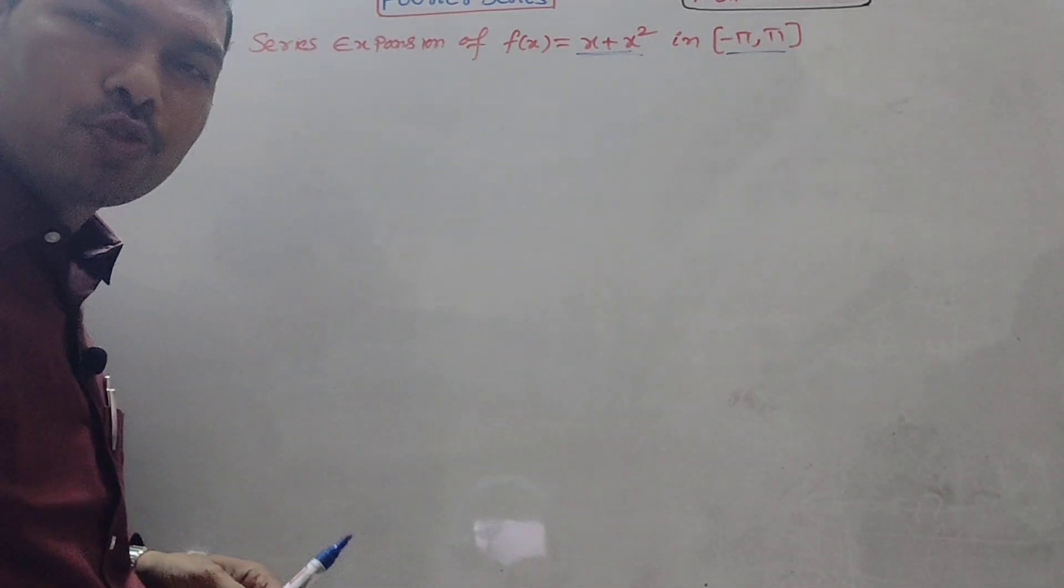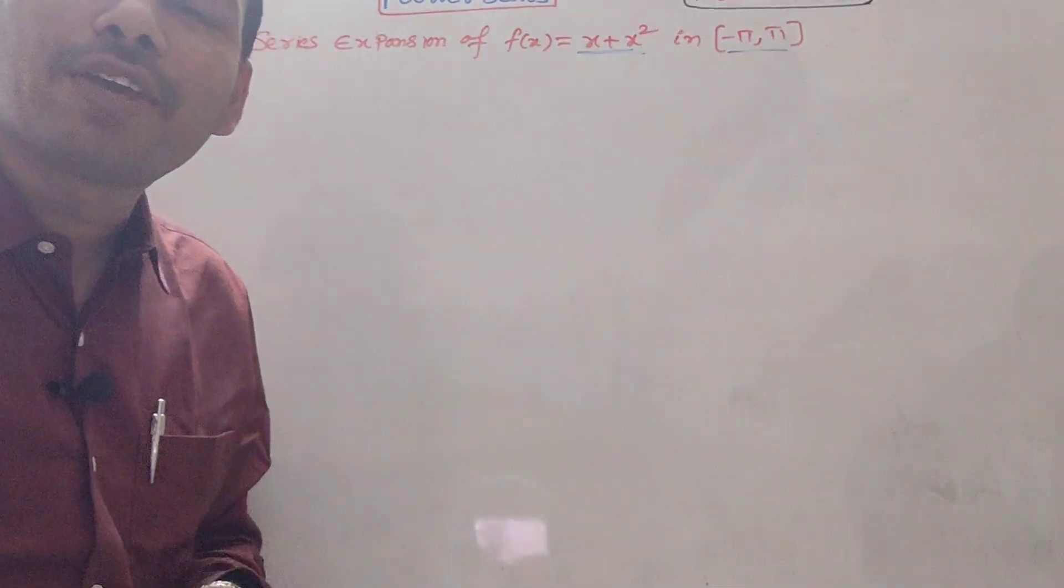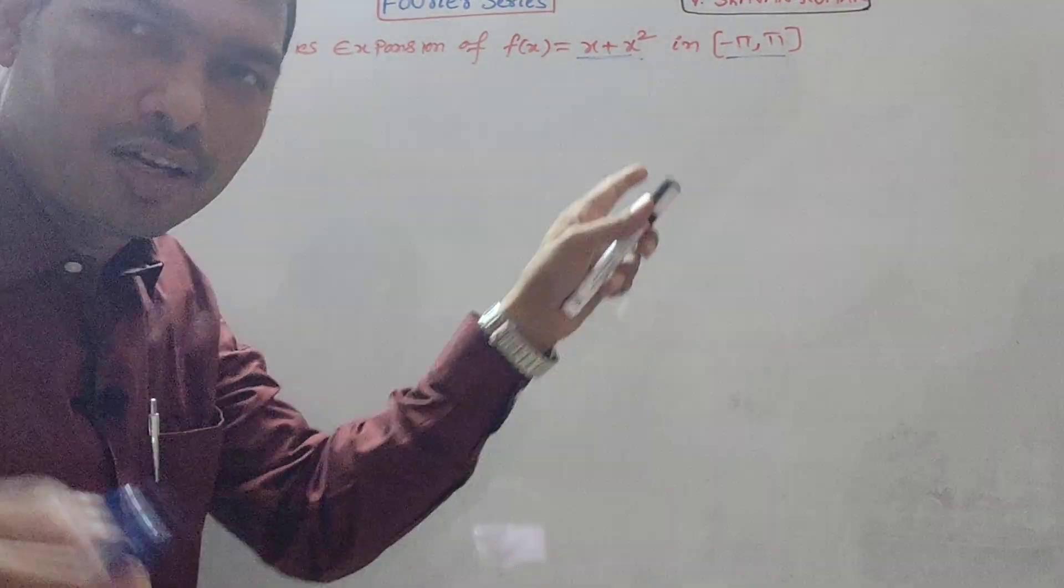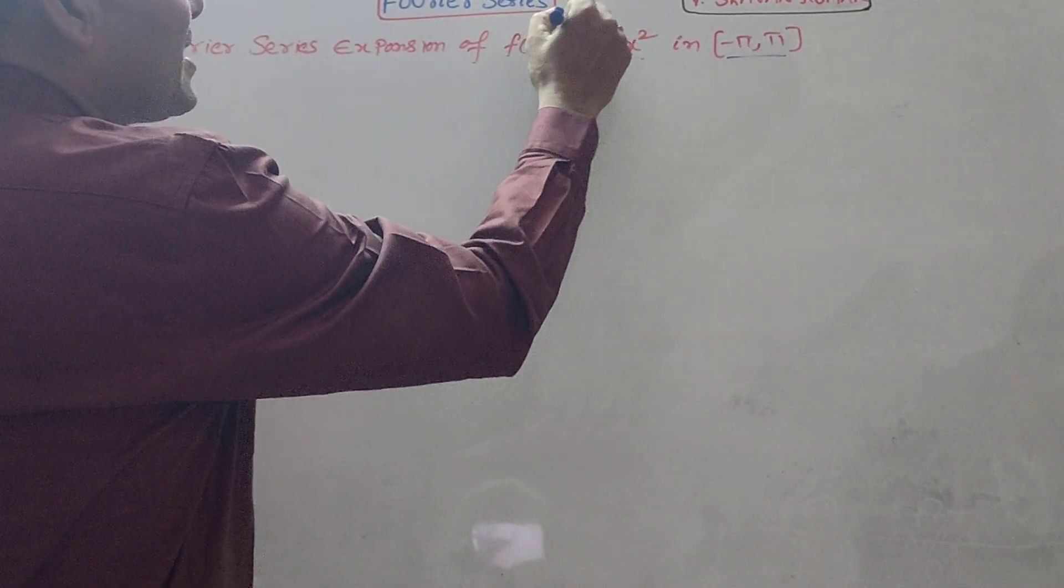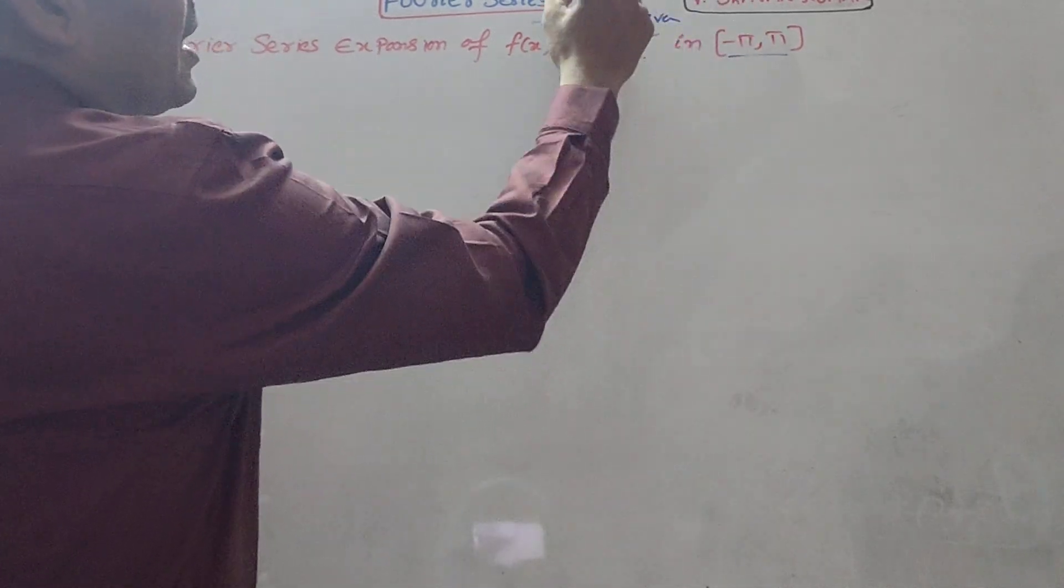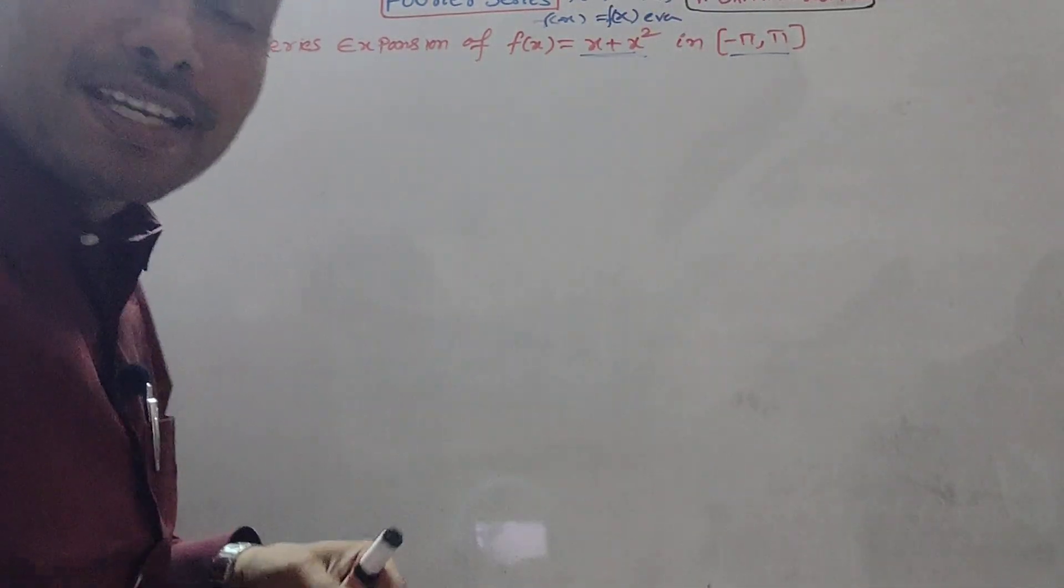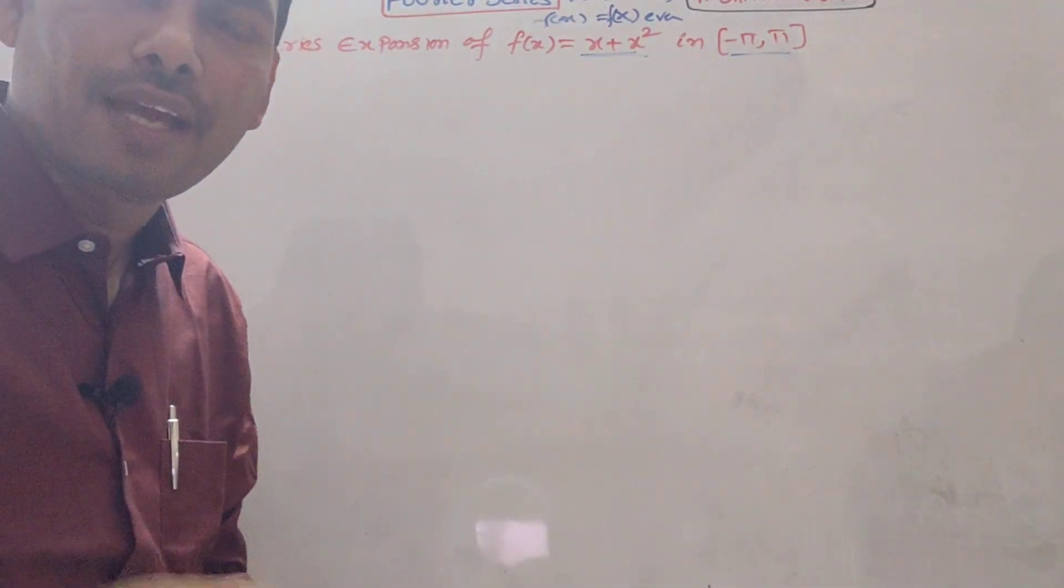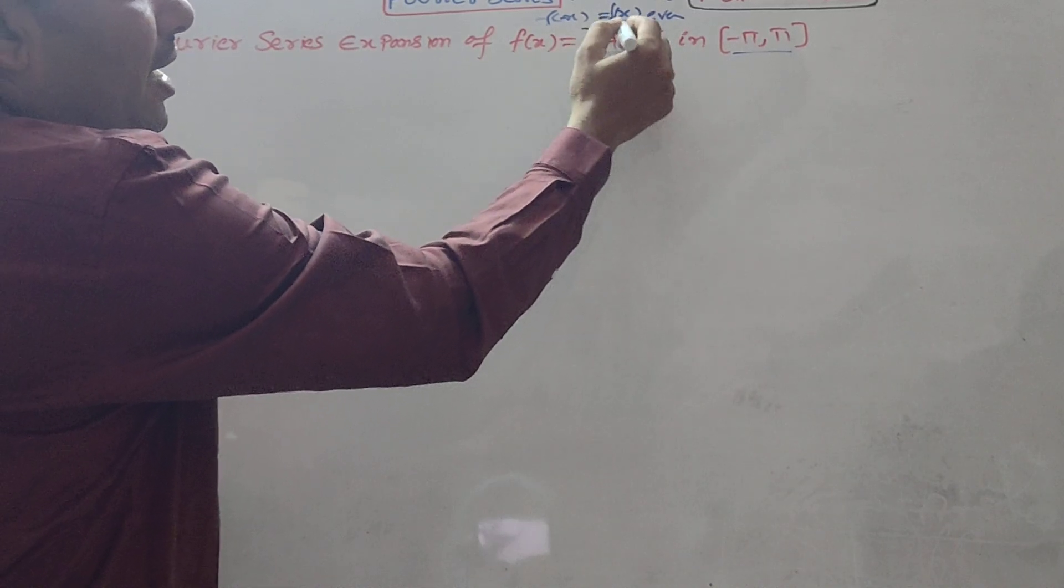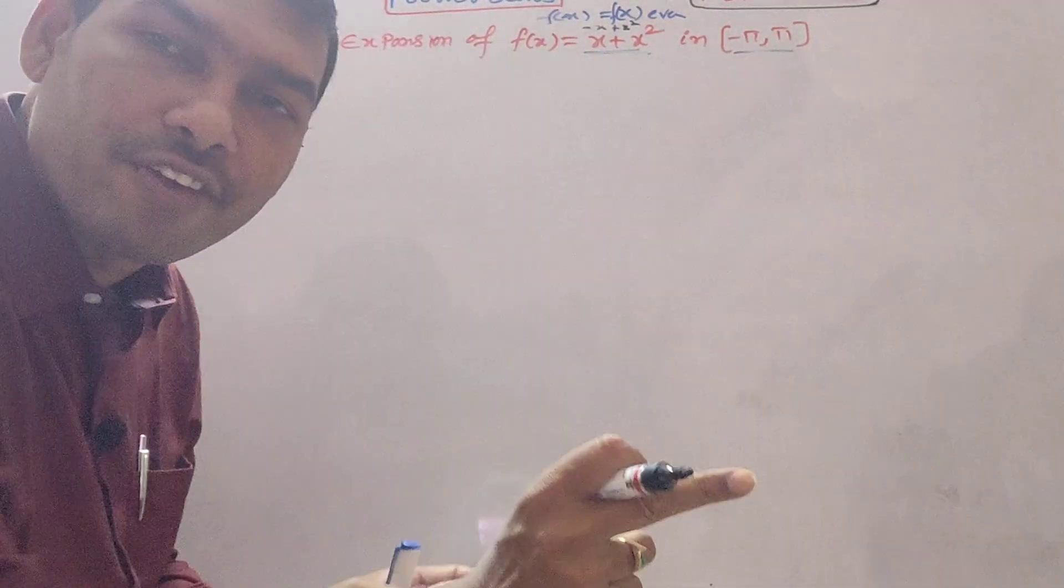I have already said that when you have a minus π to π interval, first we need to check whether the given function is even or odd. If we check the function even or odd, then the problem becomes easier. The technique is: f(minus x) = f(x) means even, f(minus x) = minus f(x) means odd.